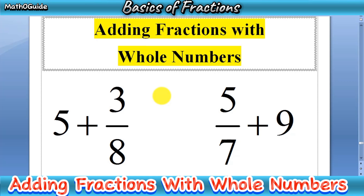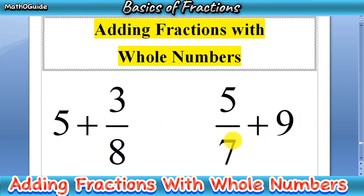You can see that we have two types of problems here. We have 5 plus 3 over 8 — here we have the whole number first and then a fraction. And our second problem is 5 over 7 plus 9, where the fraction is on the left side and the whole number comes after the addition sign.